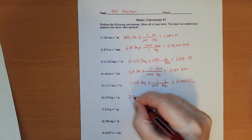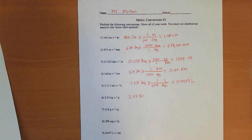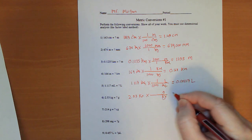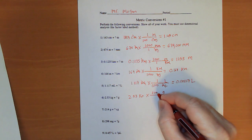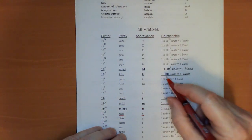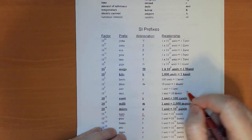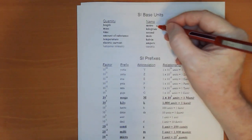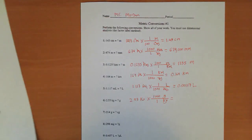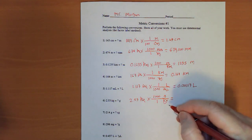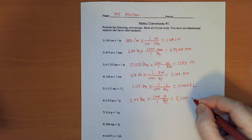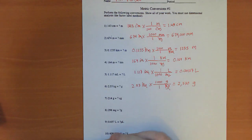For this next one, I have 2.53 kilograms. I'm converting it to grams. So, kilograms on the bottom, grams on the top. There's 1,000 grams in 1 kilogram. I can always go to my conversion sheet. There's 1,000 units in 1 kilo unit. So, when it says unit, that could be meter, gram, second, mole, kelvin, ampere, candela, any of those. So, kilogram cancels. I'm multiplying that by 1,000. So, 2,530 grams.